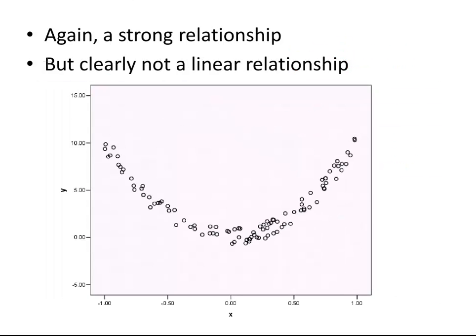Here's another example, a more extreme example. What we have here is again a very strong relationship, but it's very evidently not linear. It's harsh U-shaped. The points are quite clustered around the trend line drawn through the data, but it's not a straight line. Clearly not a linear relationship.